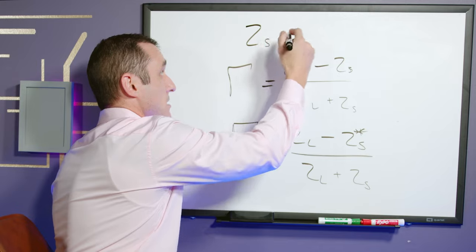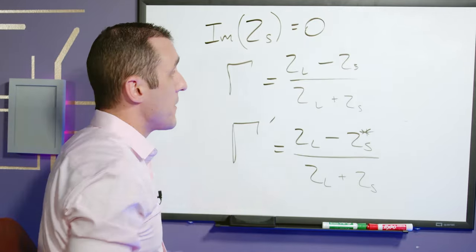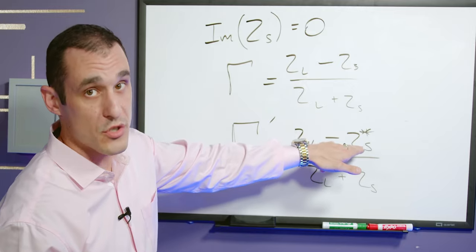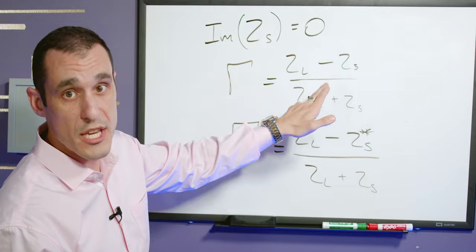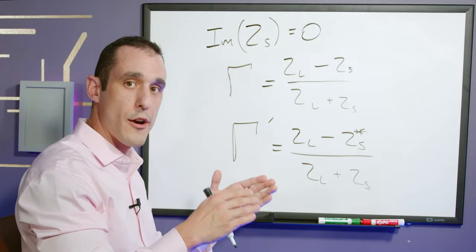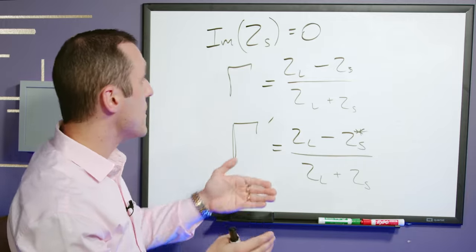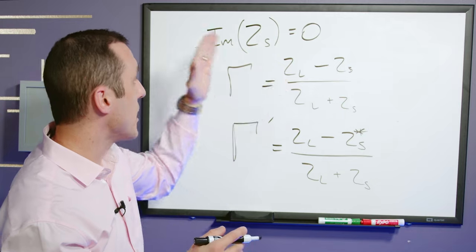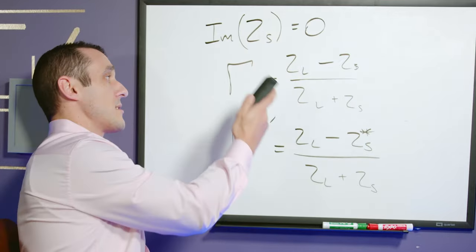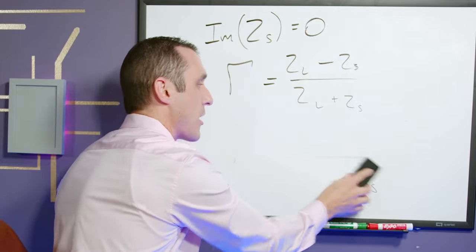If the source impedance Z sub S is purely real, so we have imaginary part of this equal to zero, then it's equal to its own complex conjugate. And so in that case for a purely real source, we actually have these two reflection coefficients being equal to each other. In fact, if you're dealing with a situation where you're taking a measurement and you're using a real reference impedance such as in a vector network analyzer, then these two situations are actually equivalent to each other. So first let's take a look at this reflection coefficient where we don't have a complex conjugate and let's see how we can actually derive this.